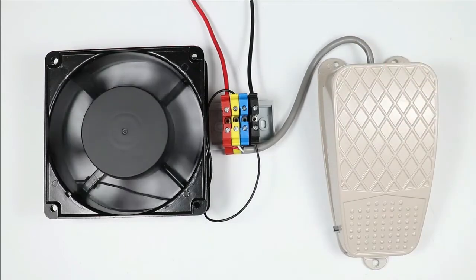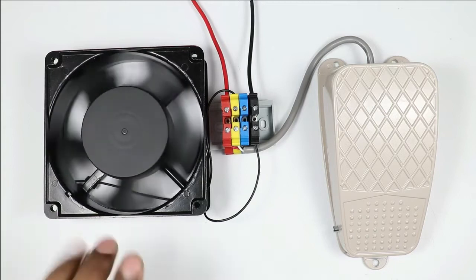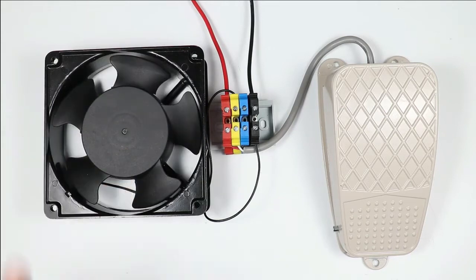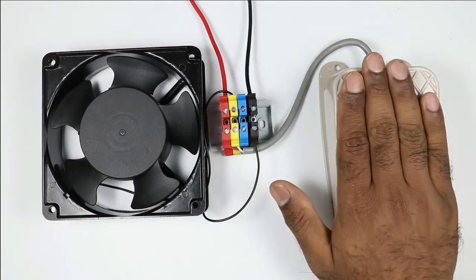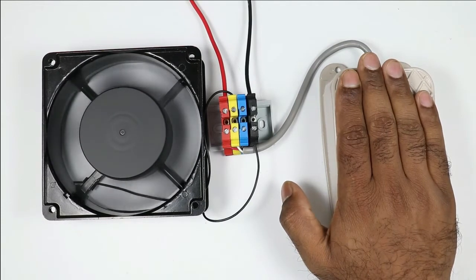On releasing the foot switch, the motor will be turned off. You can see the speed is becoming low and the motor finally turned off. If I again press this foot switch, the motor will be turned on.